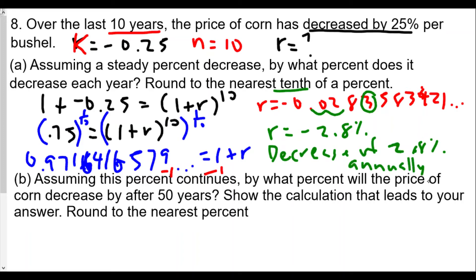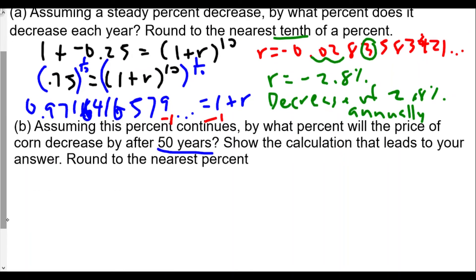Part b: Assuming this percent continues, by what percent will the price of corn decrease after 50 years? The n value is now 50, so we're going to take the 1 plus r and raise to the 50th power.